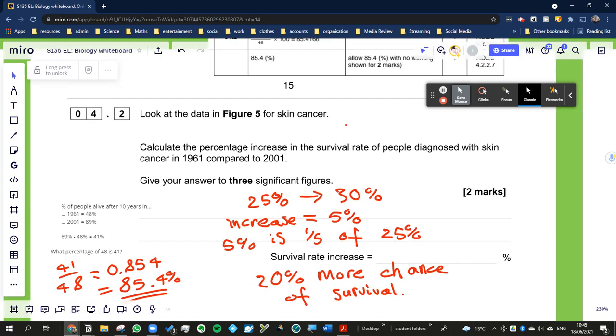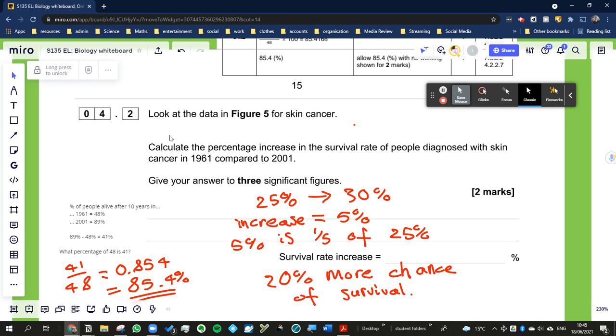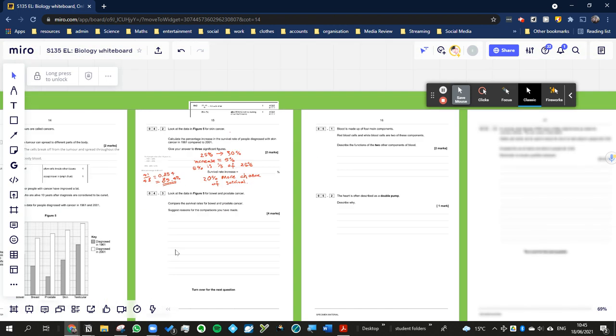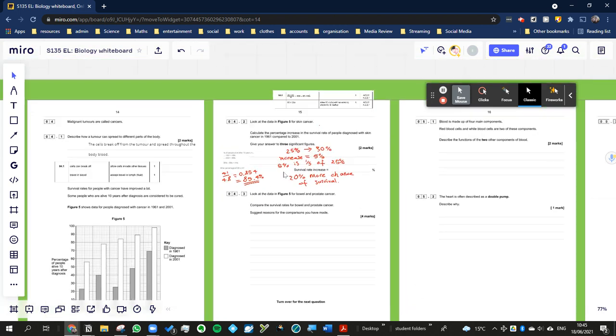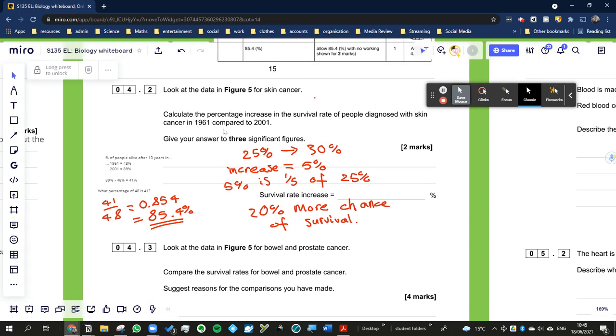So the question is saying look at the data in figure 5 for skin cancer—that's this graph over here, we'll look at in a bit more detail in a moment. Calculate the percentage increase in the survival rate of people diagnosed with skin cancer in 1961 compared to 2001. Give your answer to three significant figures.